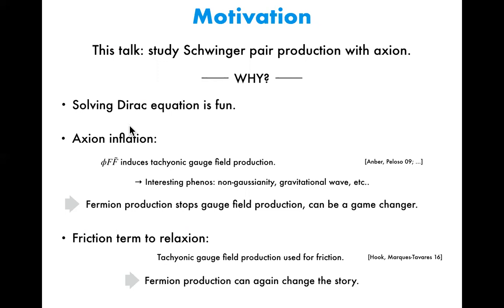If you identify the axion as the inflaton, then you can think of a coupling between the axion and a U(1) gauge field F. It is well known that this kind of coupling induces a tachyonic gauge field production, and then a lot of interesting phenomena — like gravitational waves, primordial black holes, and so on — are discussed in the literature.